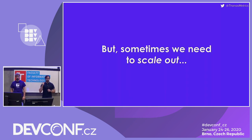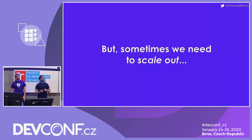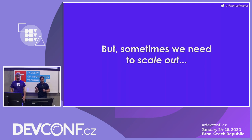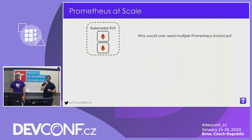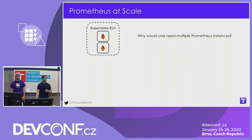We talked about why Prometheus is great and super easy to run on just one machine. But there are many times when running just one single Prometheus on one node isn't enough and we have to scale it out. Why would we even need multiple Prometheus instances? We just said you can handle 10 million time series in one single Prometheus server — it's super easy to configure. So why is this ever an issue?